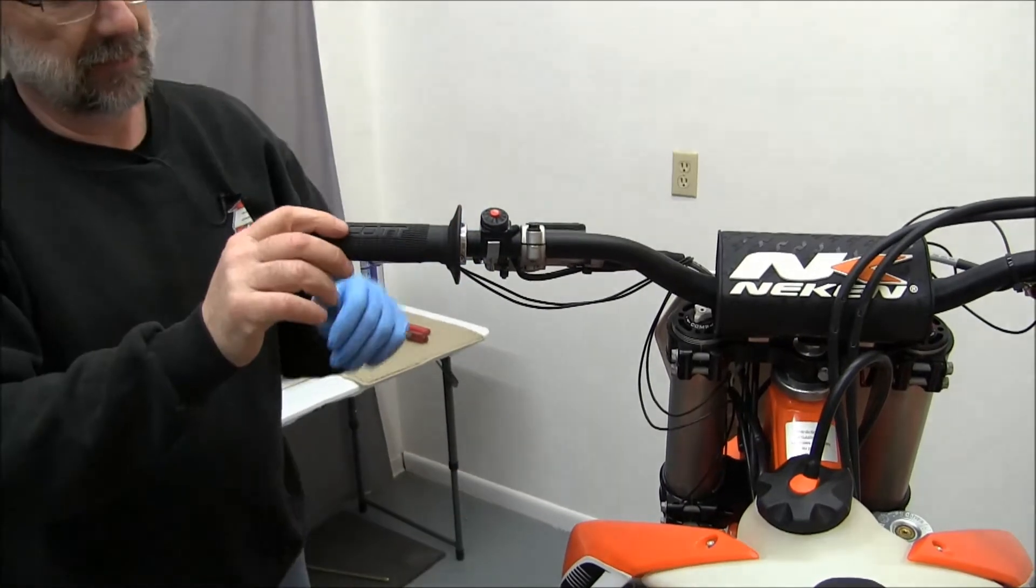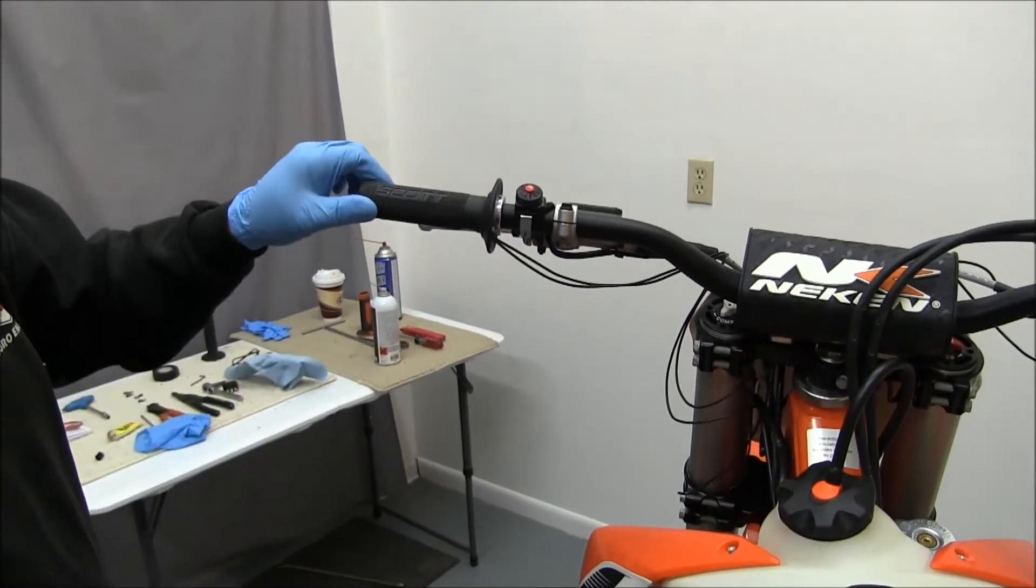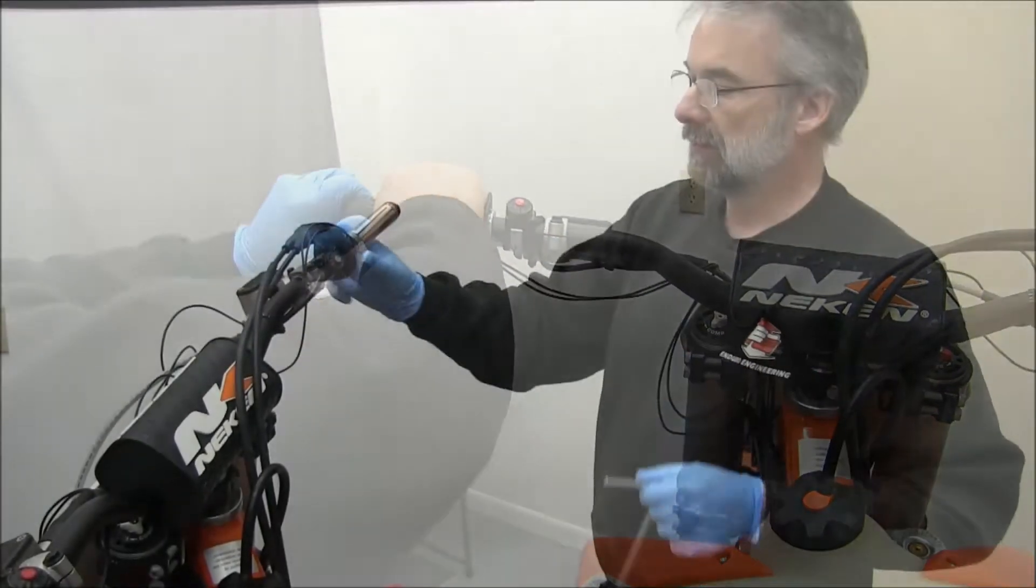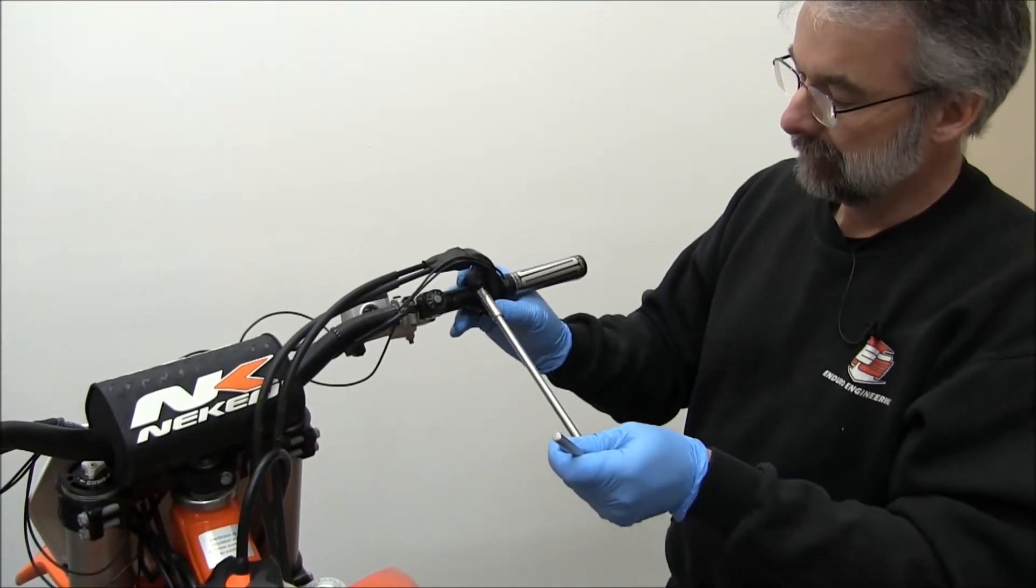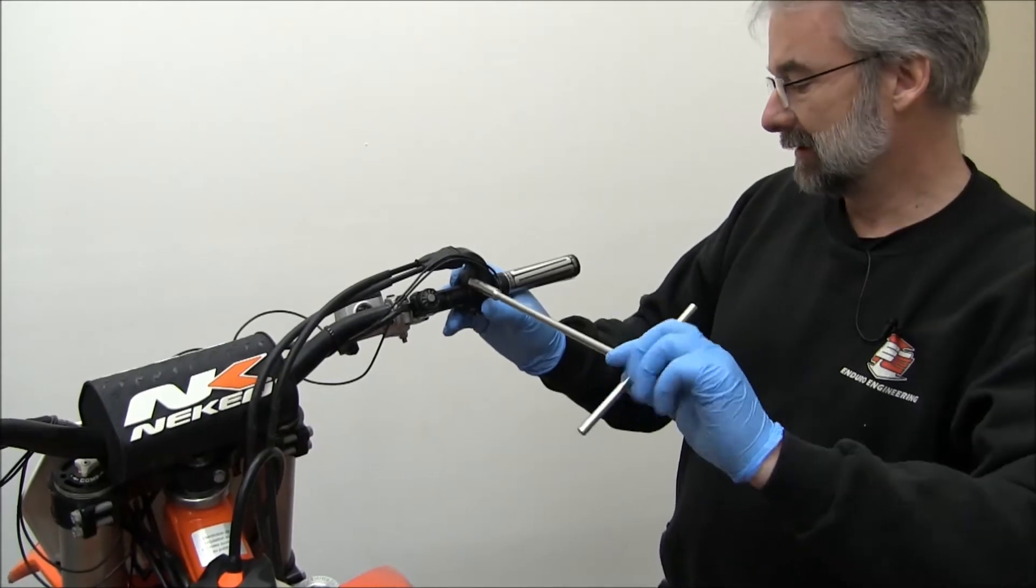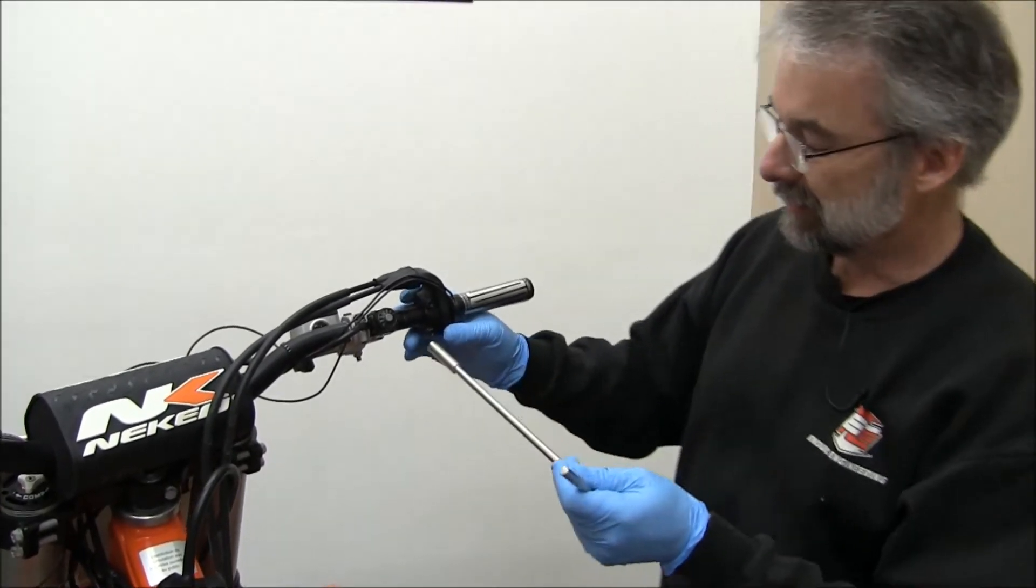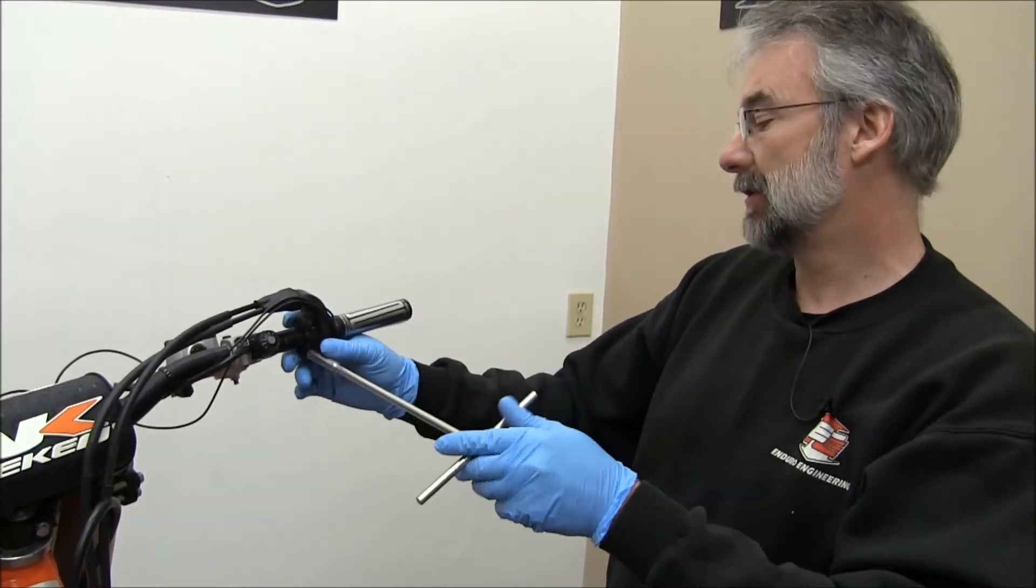You're going to have to get the grip in the position you want to run it fairly quickly. Move the whole throttle assembly further out because I don't want to get glue between the throttle tube and the actual handlebar.